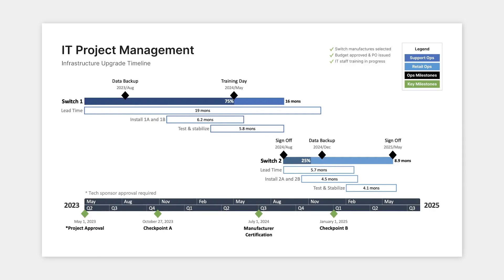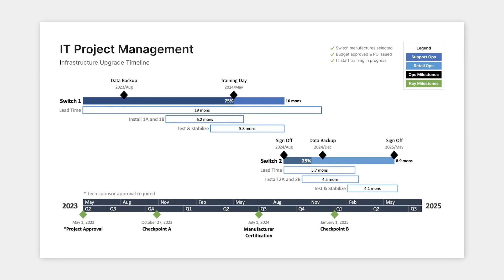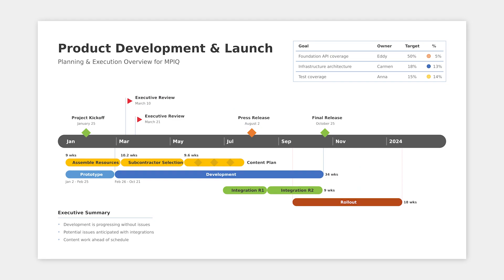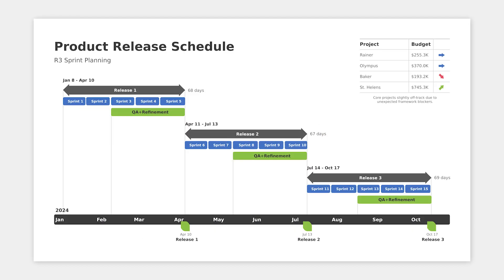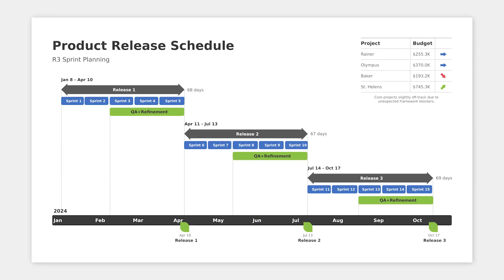By the end of this course you should be able to make clear and eye-catching timelines, roadmaps and Gantt charts within minutes. This course is split into multiple smaller videos, each covering one fundamental topic so that it's easier to follow along.